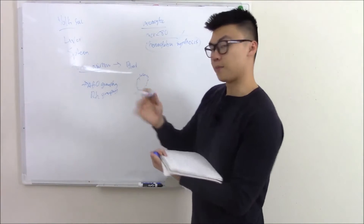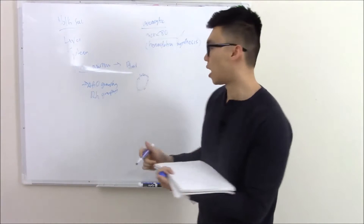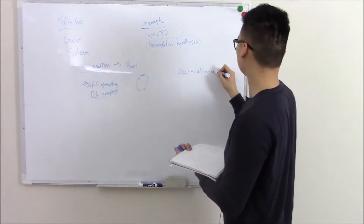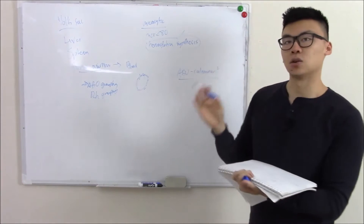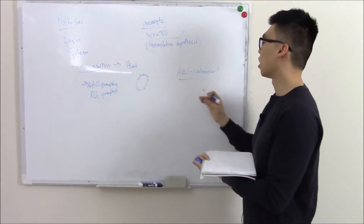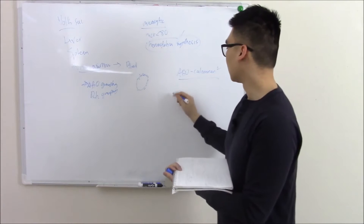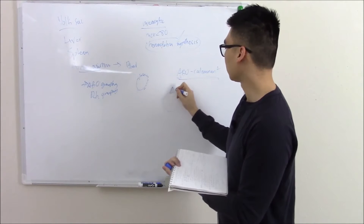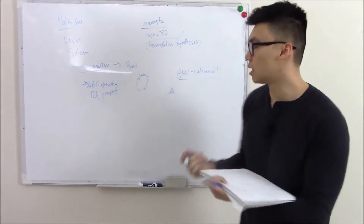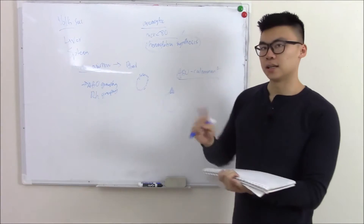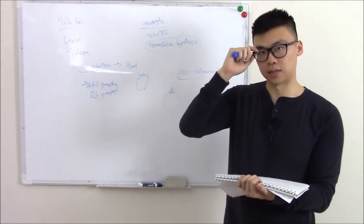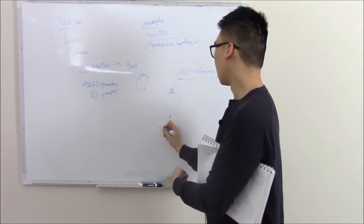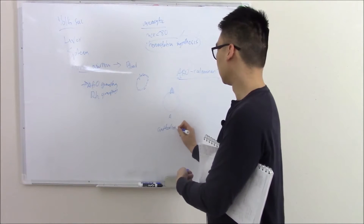ABO proteins are made by your ABO gene, and your ABO gene is co-dominant — very important you know that. That means anything it has, it will be expressed; there's no recessive masking. If you have A blood, then by definition you have the A protein. The rule of thumb is that you will make antibodies against things you don't have, so you can tell what's yours and what's not. So A blood will have antibodies against B.